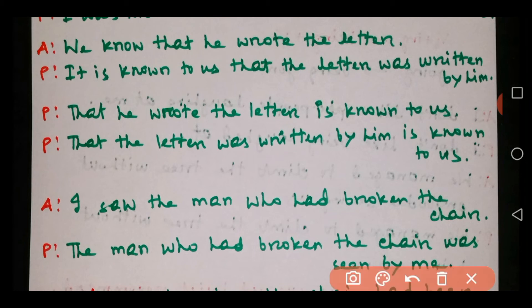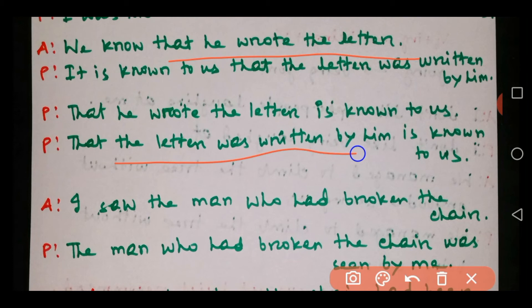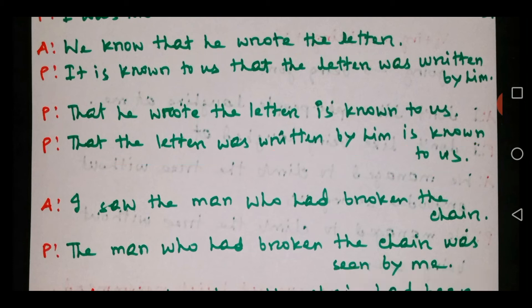Third way: take 'that he wrote the letter,' place it in the subject position, and also change it into passive — 'That the letter was written by him is known to us.' So you can change this type of sentence into passive in three different ways. You can use whichever one you like.